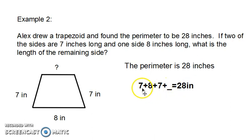In this equation, I'm going to start with the 7 and the 7 because this is a doubles fact. We'll add 7 plus 7 is 14 plus the 8 plus the unknown equals 28 inches.